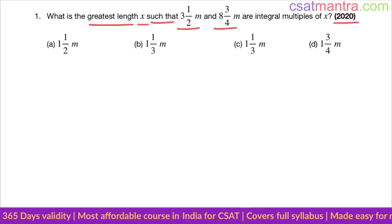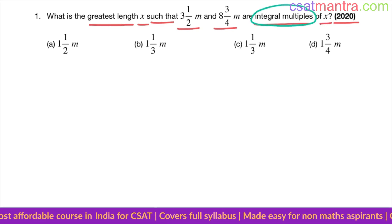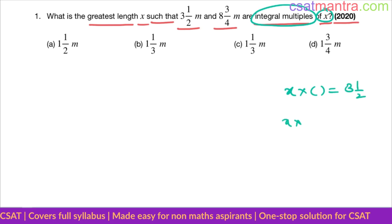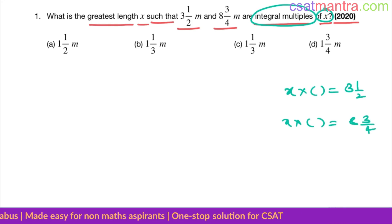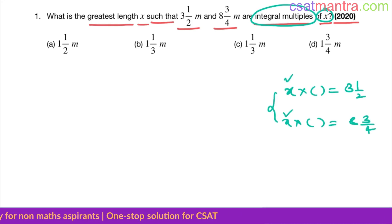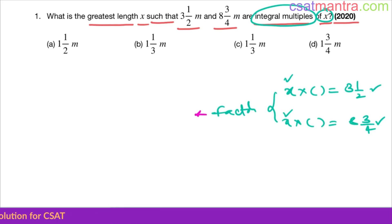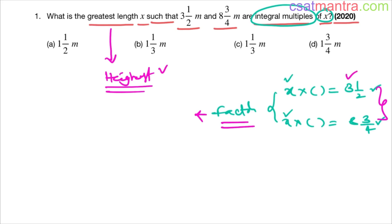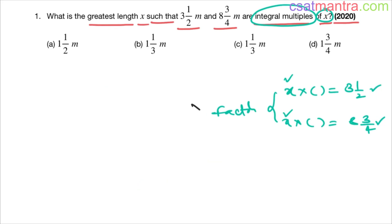What is the greatest length x such that 3 and a half meters and 8 and 3/4 meters are integral multiples of x? Integral multiples of x means x into some integer gives you 3½, and x into some integer gives you 8¾. So x is a factor of both 3½ and 8¾. Since it should be the greatest such factor, we are asked to find the highest common factor — the HCF.